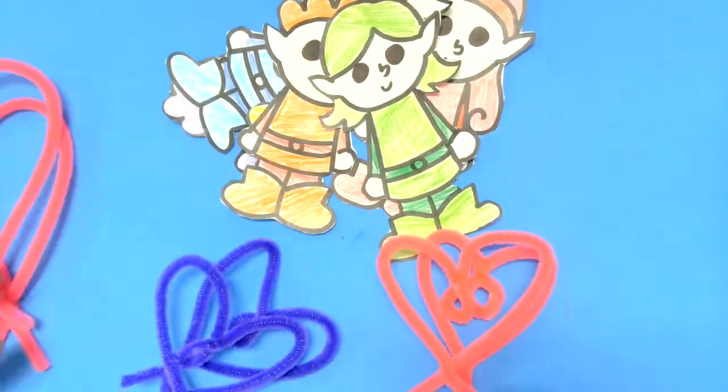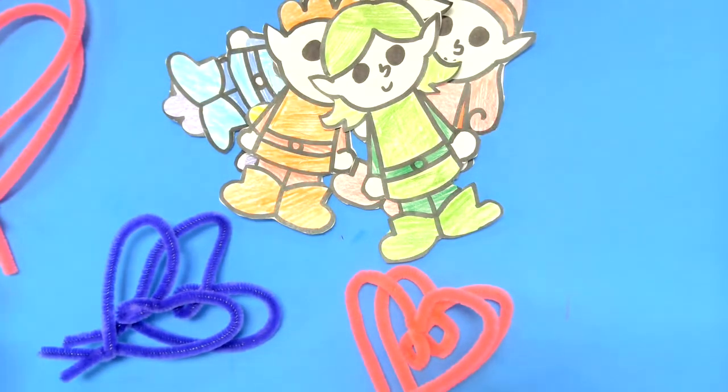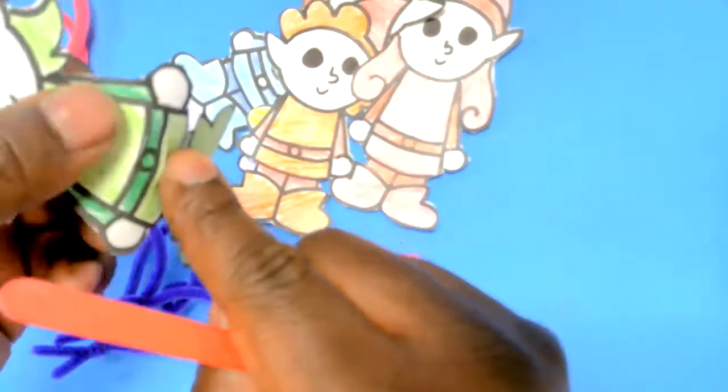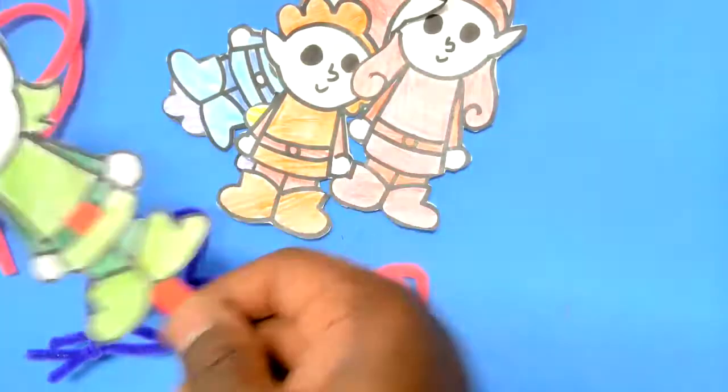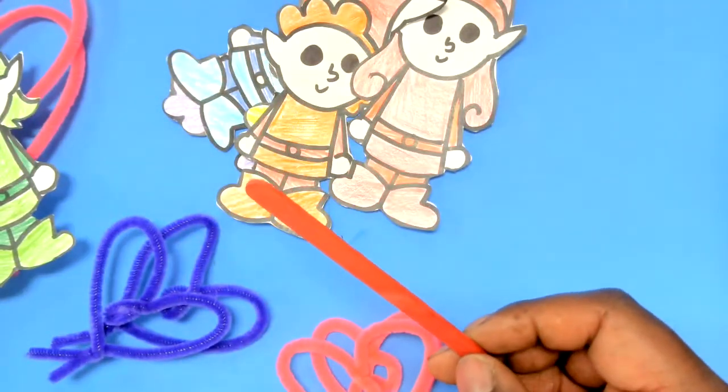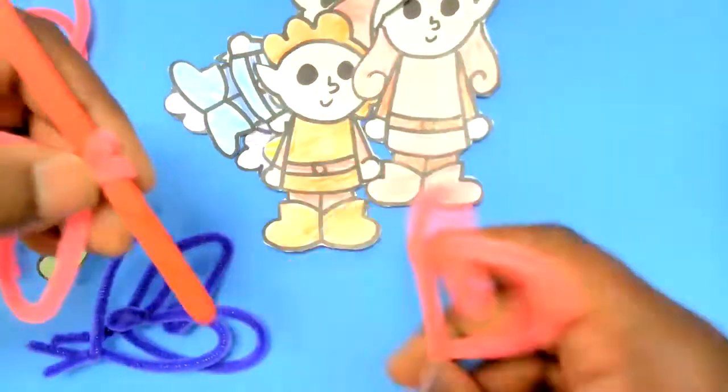So after you've made both wings and you've wrapped your ends around the middle of the popsicle stick you are almost done.